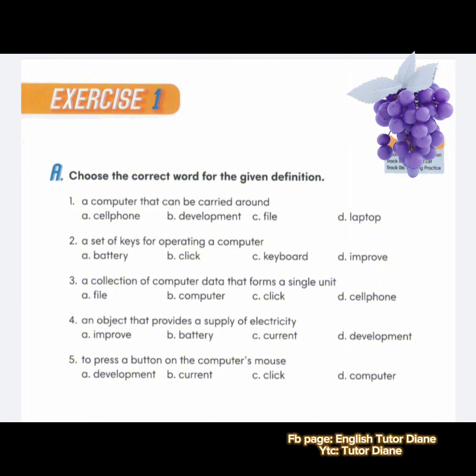Exercise one, A. Choose the correct word for the given definition. You are going to make a guess and afterwards I'm going to give the correct answer. Question number one: a computer that can be carried around. A, cell phone. B, development. C, file. D, laptop. Correct answer is D, laptop.